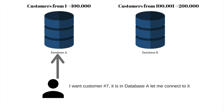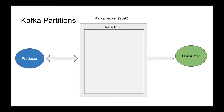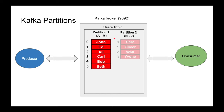We want to distribute data because queries get slower as data grows. So Kafka calls them partitions — same concept as sharding. For example, users with first names starting A to M go to partition one, and N to Z go to partition two. But the moment you introduce partitioning, consumers and producers have to know what partition to read and write from, which introduces complexity.